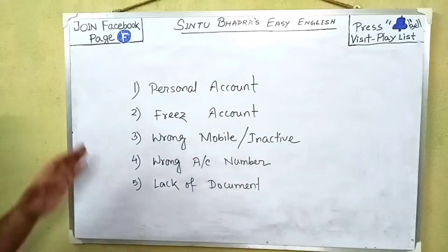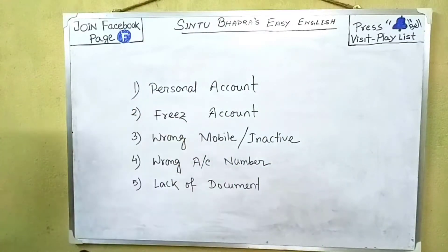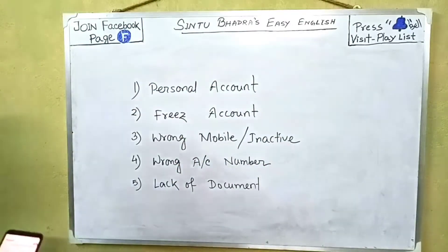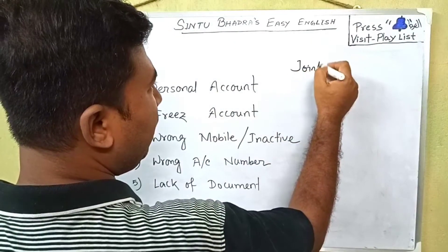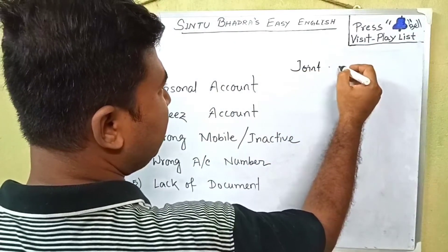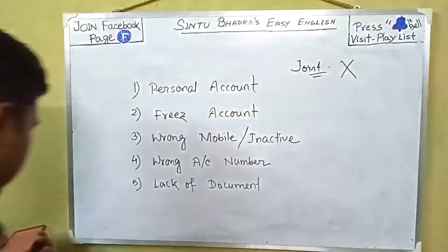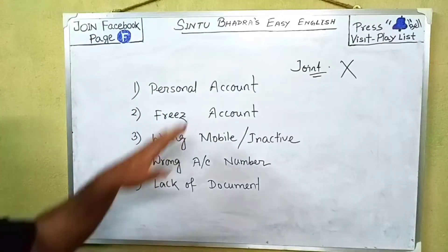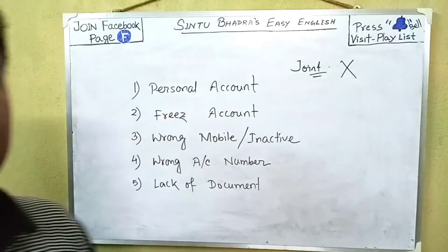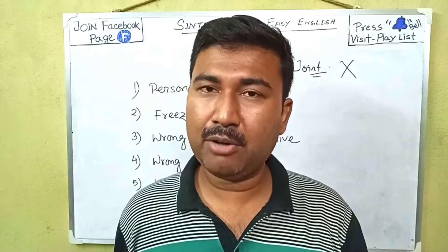Once you have a personal account, you have a joint account for your father. You have a personal account for your student account. In this case, you can see all student accounts.